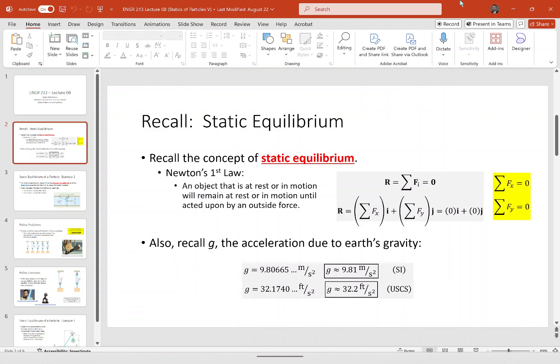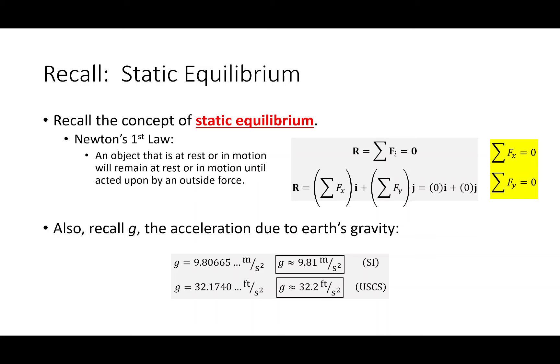Last time we started applying static equilibrium — seven lectures in. The first thing we did after math and physics review was learn about vectors and how to add vectors that share a common point. The simplest way is to write vectors in i-j notation, then add up the x components and y components. For static equilibrium, the resultant vector must be zero, yielding two equations: sum of forces in x equals zero, and sum of forces in y equals zero.